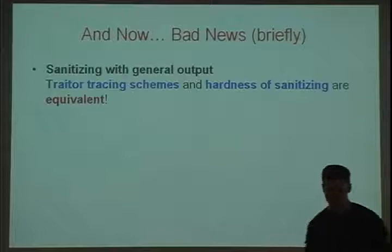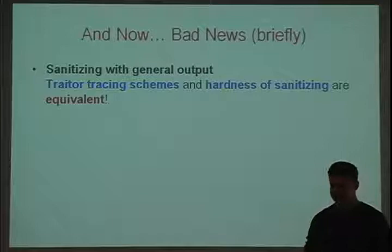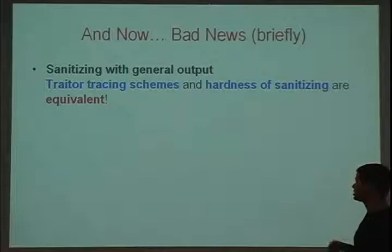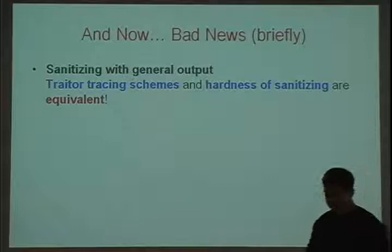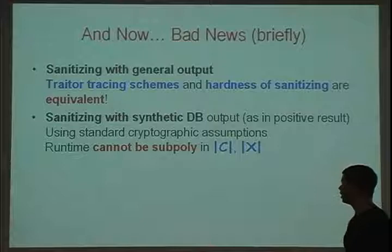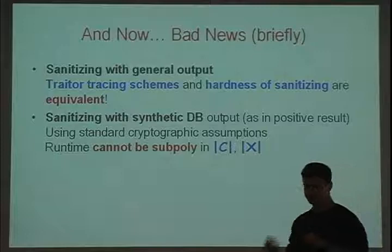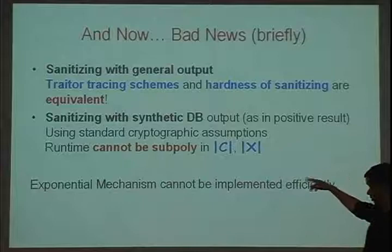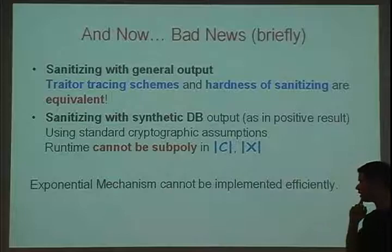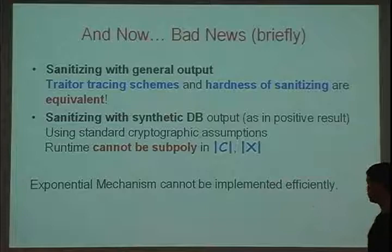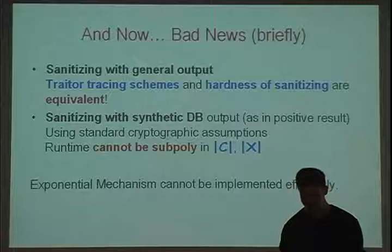Briefly, for the bad news: we think about sanitizing with both general output and with synthetic database output, and show negative results. For general output, we show a tight connection between traitor tracing schemes, cryptography, and the hardness of sanitizing. For sanitizing with synthetic database outputs, using standard cryptographic assumptions, we show that the running time cannot be sub-polynomial in either the data universe size or the query set size.